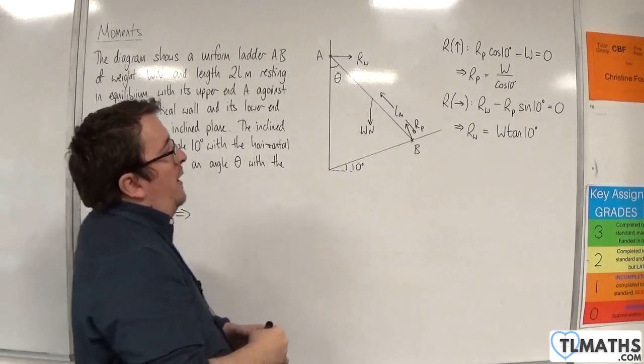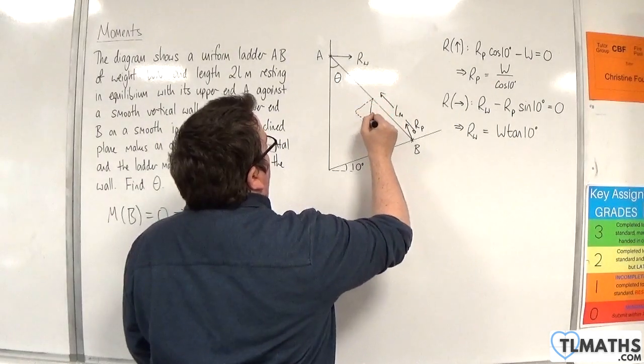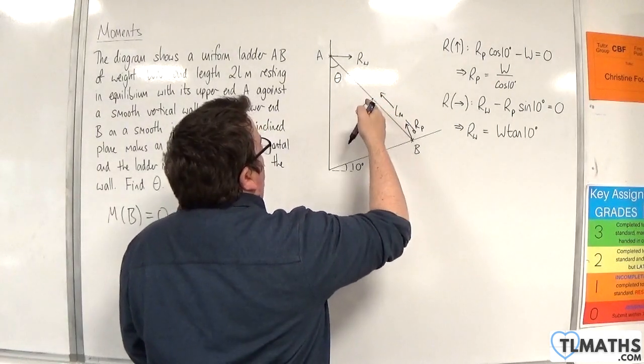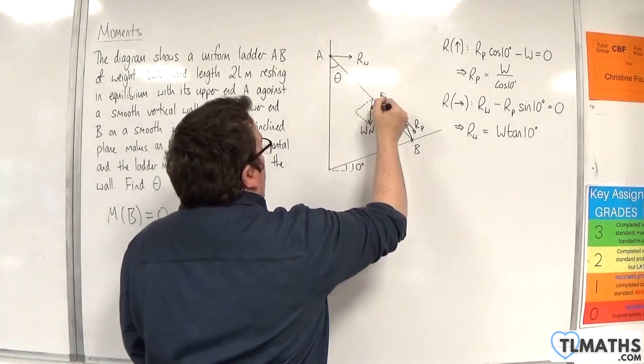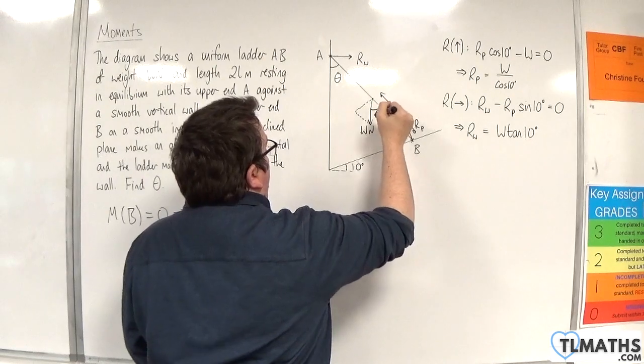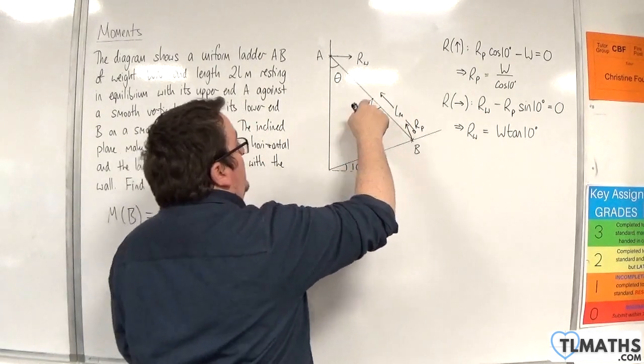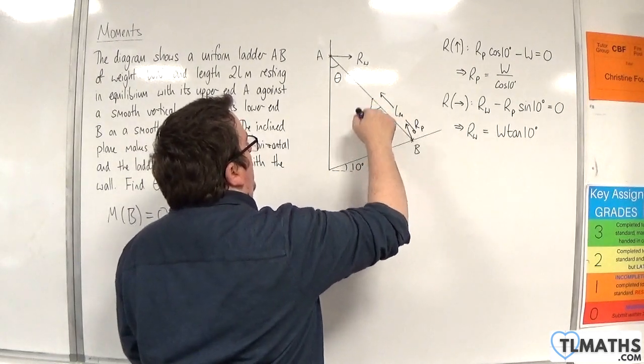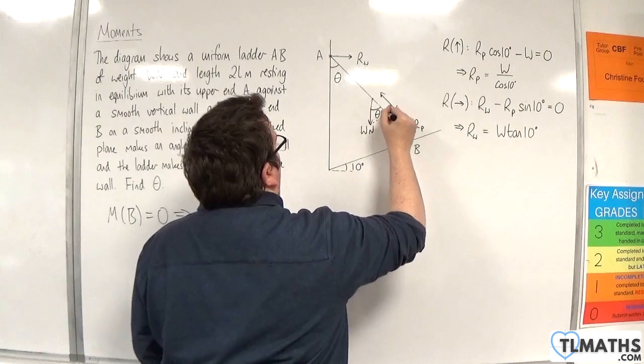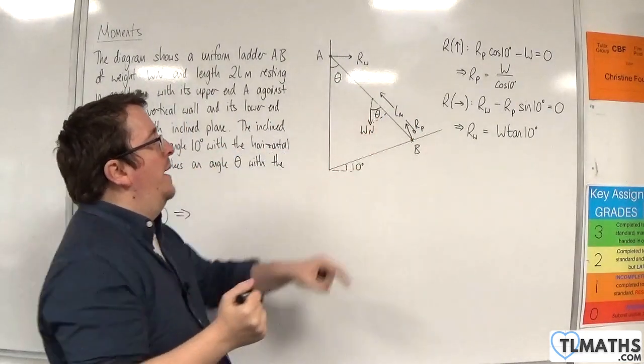Now, ordinarily, I would break W up into its components this way. But the problem is that I don't know what that angle is. I do know that that angle is theta, so that angle is theta. So, I could work with 90 take away theta here, but I don't particularly want to do that. So, instead, I will break up W with its components this way.